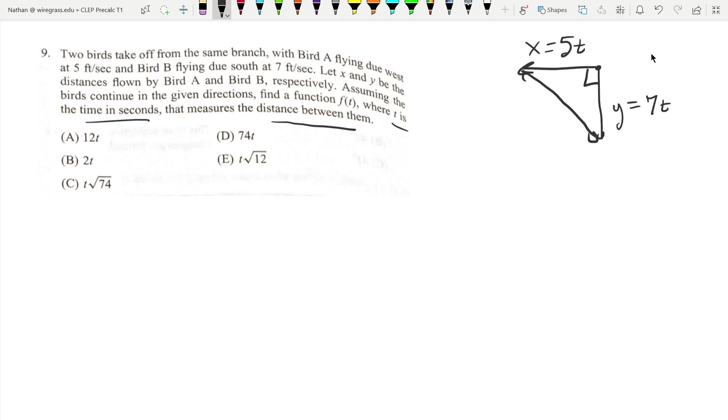You can see that this makes a right triangle. Pythagorean theorem works on the distances, not the speed. So make sure you have that in your mind when you're talking about Pythagorean theorem.